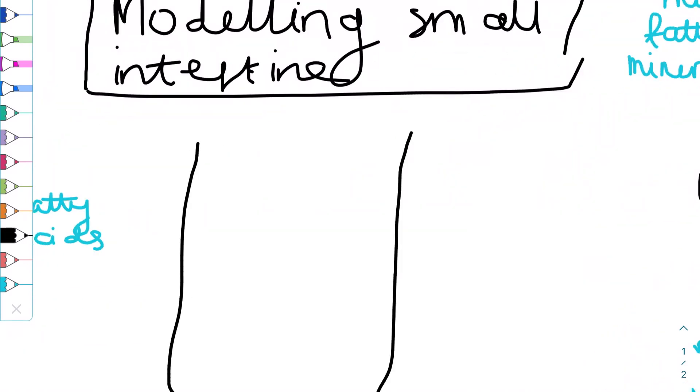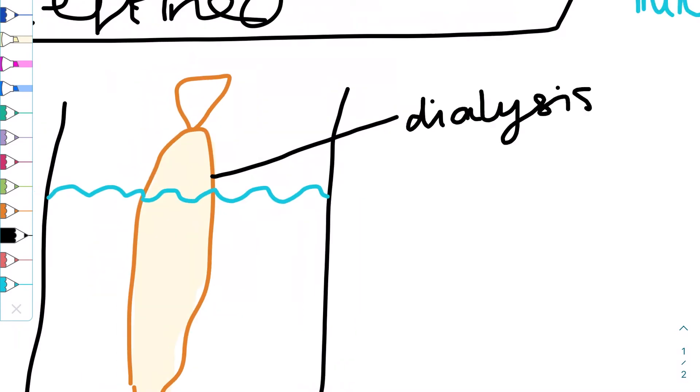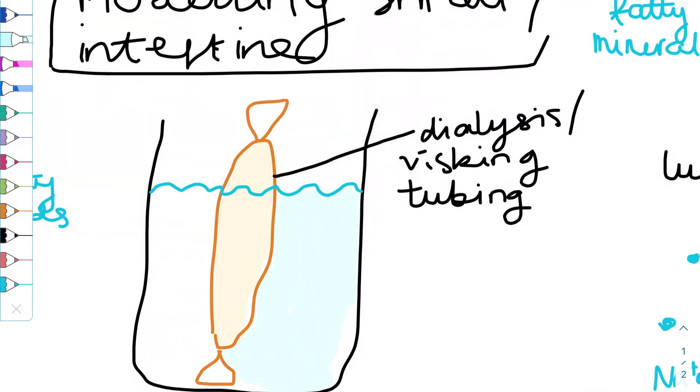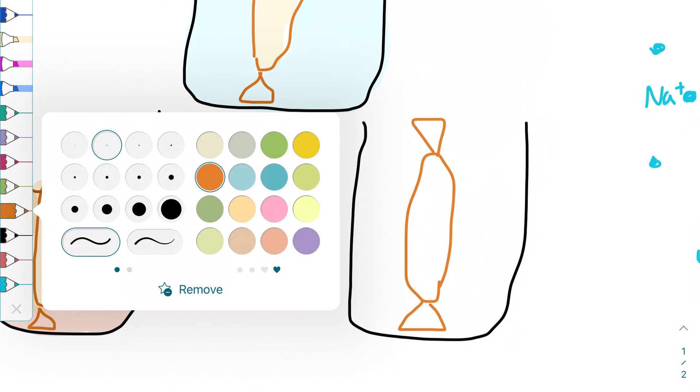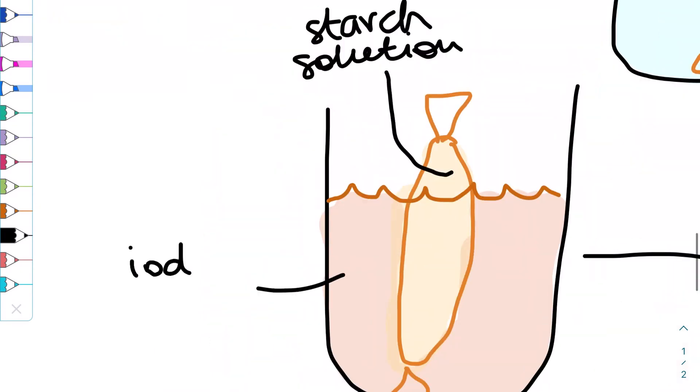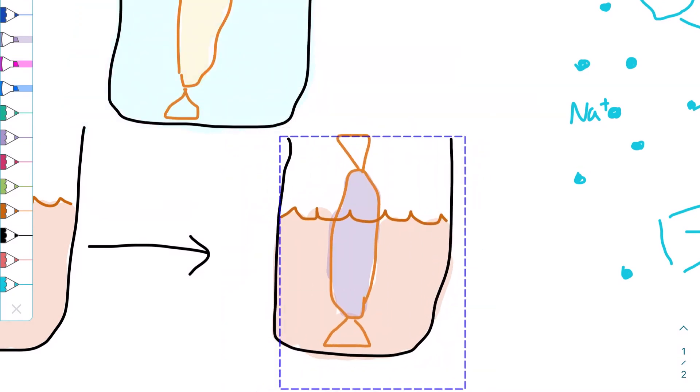The permeability of the small intestine can be replicated using dialysis or viscing tubing. Both the intestine and dialysis tubing are selectively permeable, meaning that they only allow small molecules to pass through. Experiments can be designed to model the process of diffusion of various substances. For example, the tubing, which is filled with a solution containing starch, can be placed into a beaker with iodine, which is a starch indicator. Iodine is naturally reddish brown. After some time, the contents of the tubing would turn purple because the pores in the tubing are large enough to allow iodine to pass through. Iodine turns purple in the presence of starch. The liquid outside the beaker would remain brown, because starch is too large to pass through the pores in the tubing.